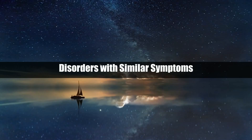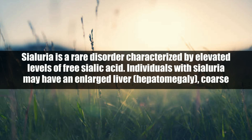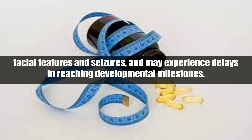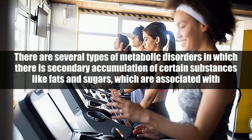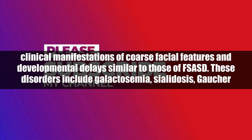Sialuria is a rare disorder characterized by elevated levels of free sialic acid. Individuals with sialuria may have an enlarged liver (hepatomegaly), coarse facial features, and seizures, and may experience delays in reaching developmental milestones. There are also several types of metabolic disorders involving secondary accumulation of certain substances like fats and sugars, which are associated with clinical manifestations of coarse facial features and developmental delays similar to those of FSASD.